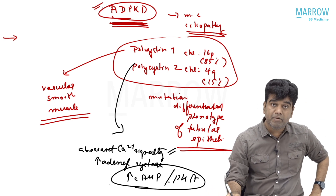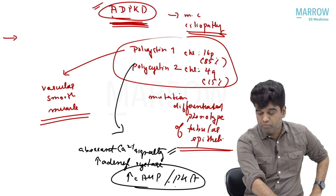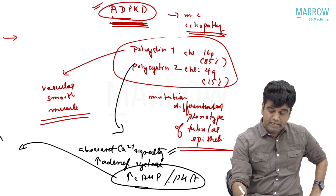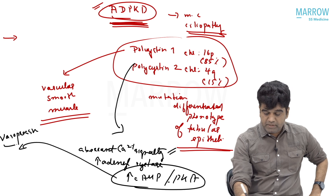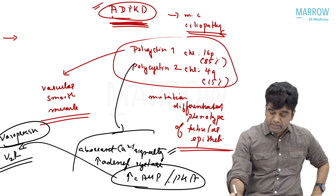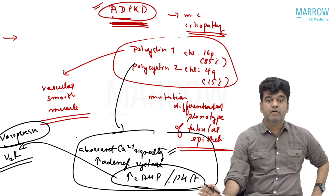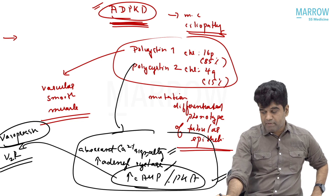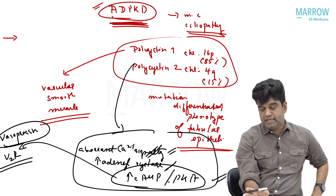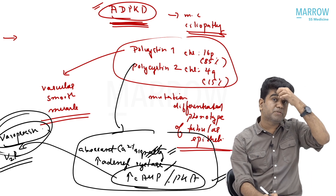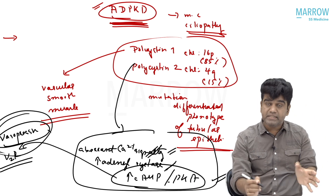This increased cyclic AMP and protein kinase A may be brought about by a few more entities. Vasopressin is very important here — vasopressin binds to its V2 receptor and thus increases cyclic AMP and protein kinase A. These are the major changes occurring here. Aberrant calcium signaling and increase in cyclic AMP/protein kinase A has come as an MCQ. A very important mediator here is vasopressin, and that is why we try to block the V2 receptor during treatment.